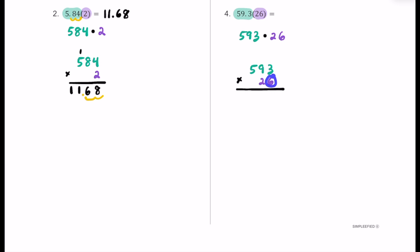We take this six and start by multiplying by three: that's 18 — put the eight and carry the one. Then six times nine is 54, plus one is 55 — put the five and carry the five. Six times five is 30, plus five is 35 — put the five in the hundreds place and the three in the thousands place. Now the six has done its job. We focus on the two, which is really 20, so we put a placeholder. Two times three is six, two times nine is 18 — put the eight and carry the one. Two times five is 10, plus one is 11 — put one and one.